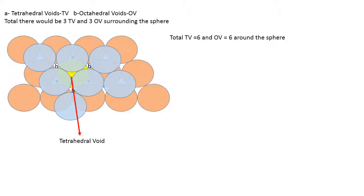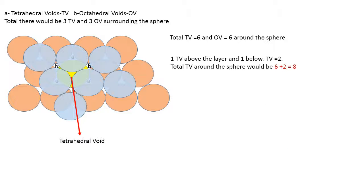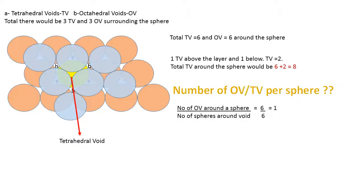At the same time, if I place the layers below the yellow colored sphere, I would have one more tetrahedral void formed below, giving a total of 8 tetrahedral voids surrounding the yellow colored sphere. The next question is: how many octahedral voids and tetrahedral voids are present per sphere? For that we have a formula — the number of octahedral voids around the sphere over the number of spheres around the octahedral void — that comes to 6.